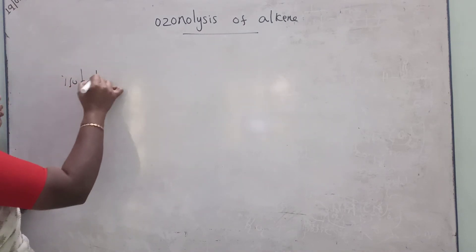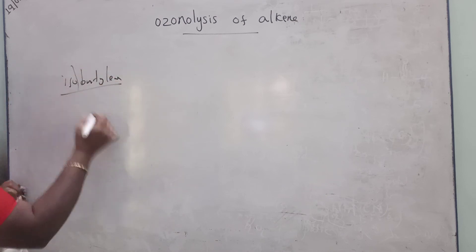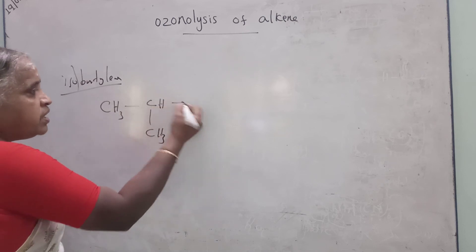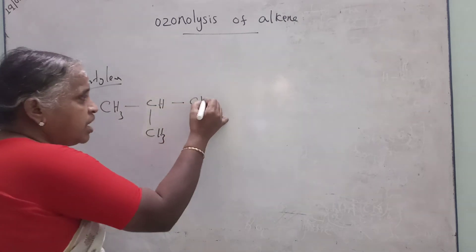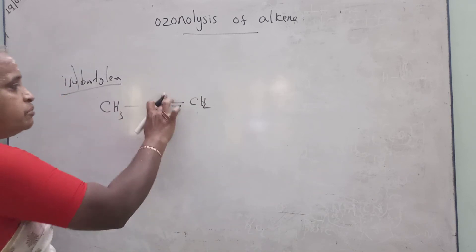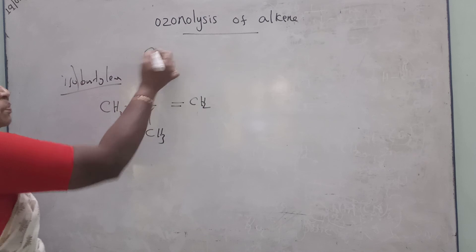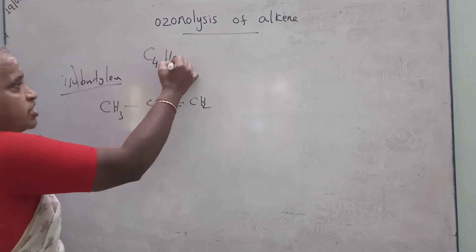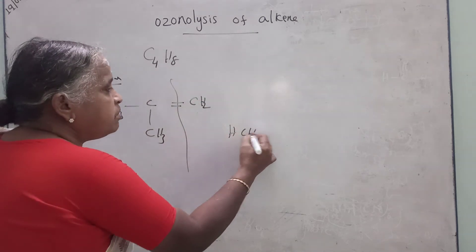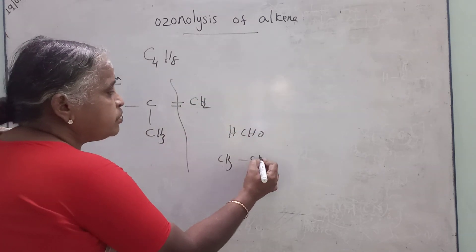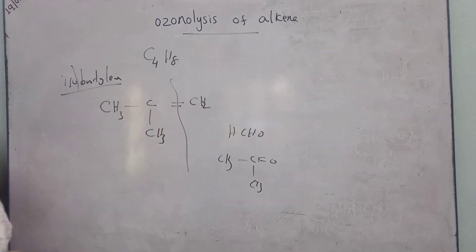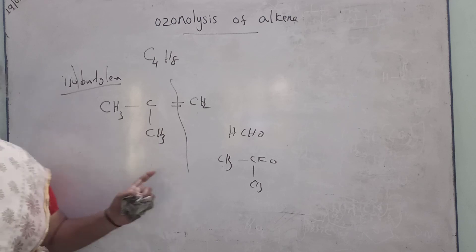Now I am taking isobutylene. Isobutylene is C₄H₈. Here there is a double bond — you apply the valency. From isobutylene, the ozonolysis gives acetone as one product — that fragment is called acetone. By simply writing the reaction, you can identify the products. Prepare well, children.